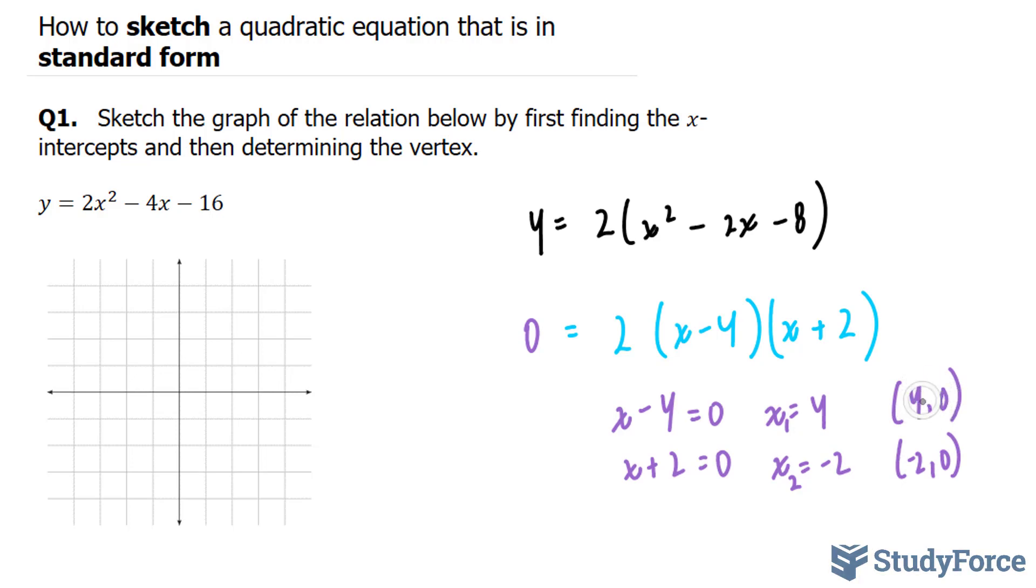The reason why it's comma 0 for both of them is because I set y = 0. So we're finding where this parabola will cross the x-axis, and the x-axis is at y = 0. So I'm going to plot these points. My first point is (4, 0), and my other point is (-2, 0).